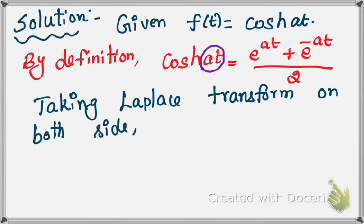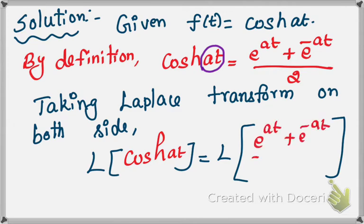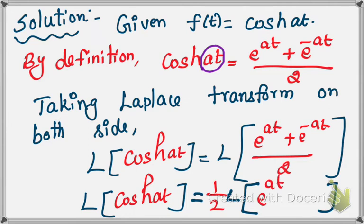L of cosh(at) is equal to the Laplace transform of e^(at) plus e^(-at) divided by 2. Taking 1 by 2 outside, so L of cosh(at) equals 1 by 2 into L of e^(at) plus e^(-at).